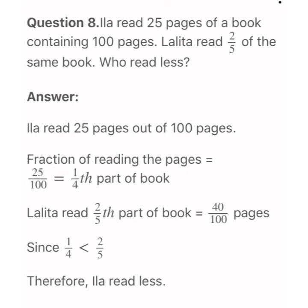Question number 8: Eela read 25 pages of a book containing 100 pages. Lalita read 2 fifths of the same book. Who read less? Eela read 25 pages out of 100, so the fraction is 25 upon 100. When we reduce it to simplest form we get 1 fourth. So Eela read 1 fourth part of the book.